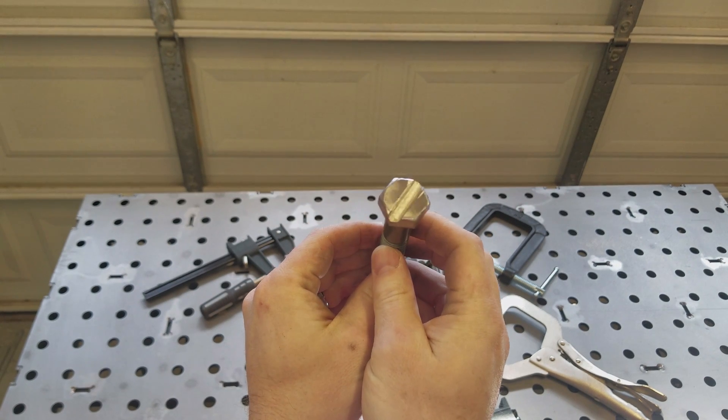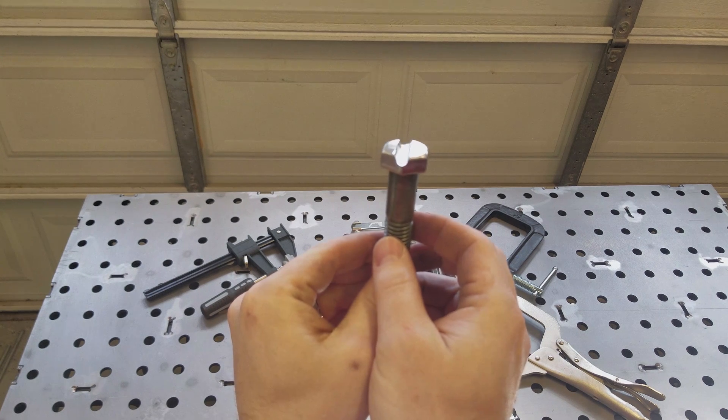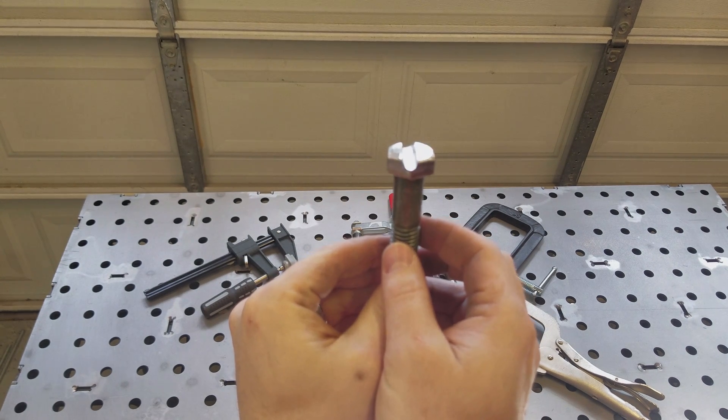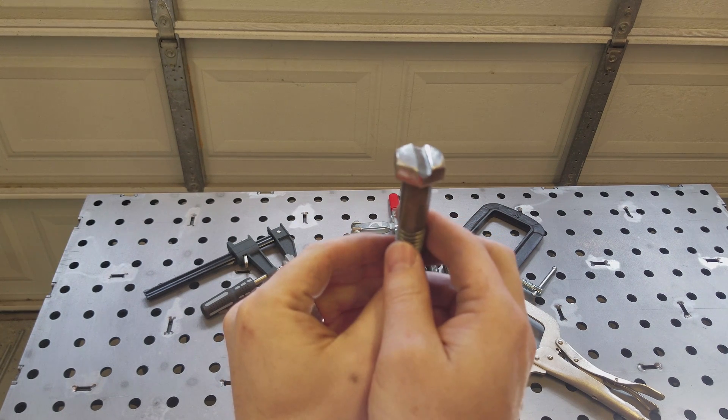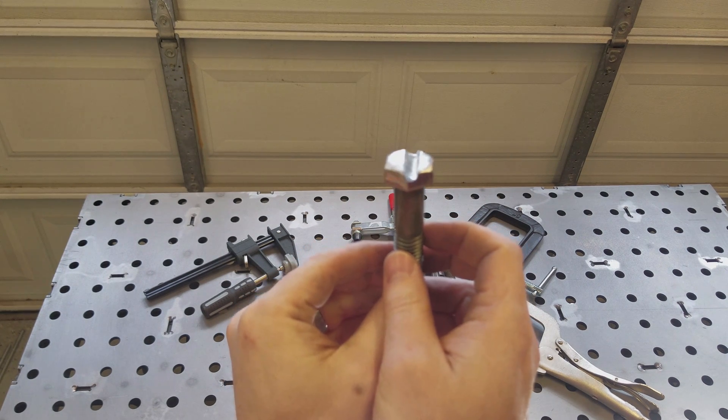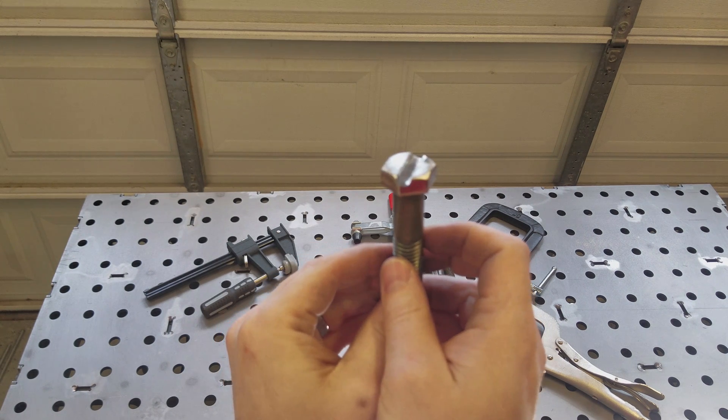We're back and I went ahead and cut that groove in the head of the bolt. See nothing too deep, nothing crazy, just enough to stick the shaft of that clamp in there and get it bonded together. Just with the angle grinder and that grinding wheel I showed you earlier.